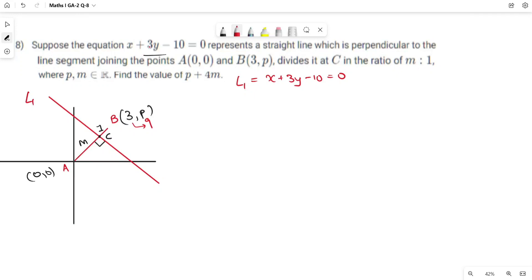Eighth question. Suppose the equation x plus 3y minus 10 equals 0 represents a straight line.